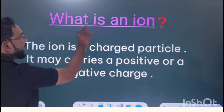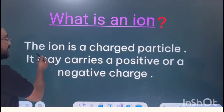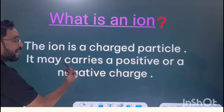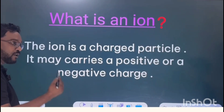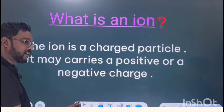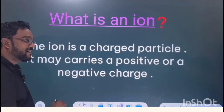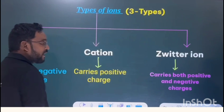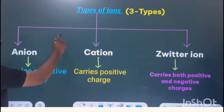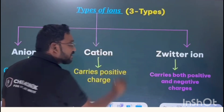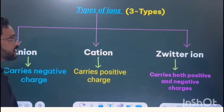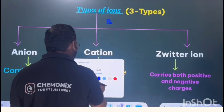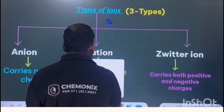Now let me tell you what is an ion. An ion is a charged particle. It may carry a positive or a negative charge. If a positive charge is present or if a negative charge is present, that charged particle is called an ion. Now let me tell you how many types of ions there are, based on the charge present on the ion.